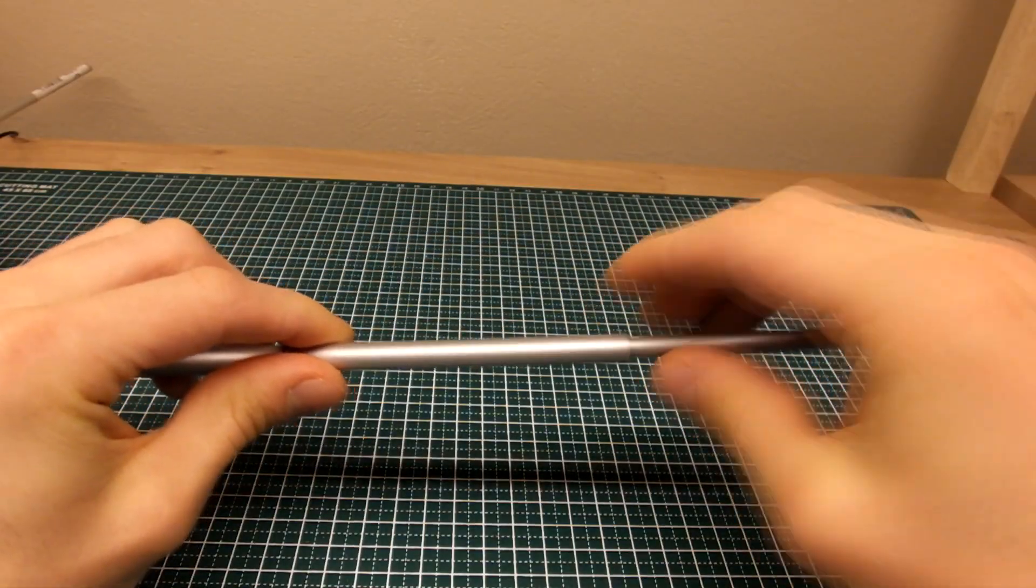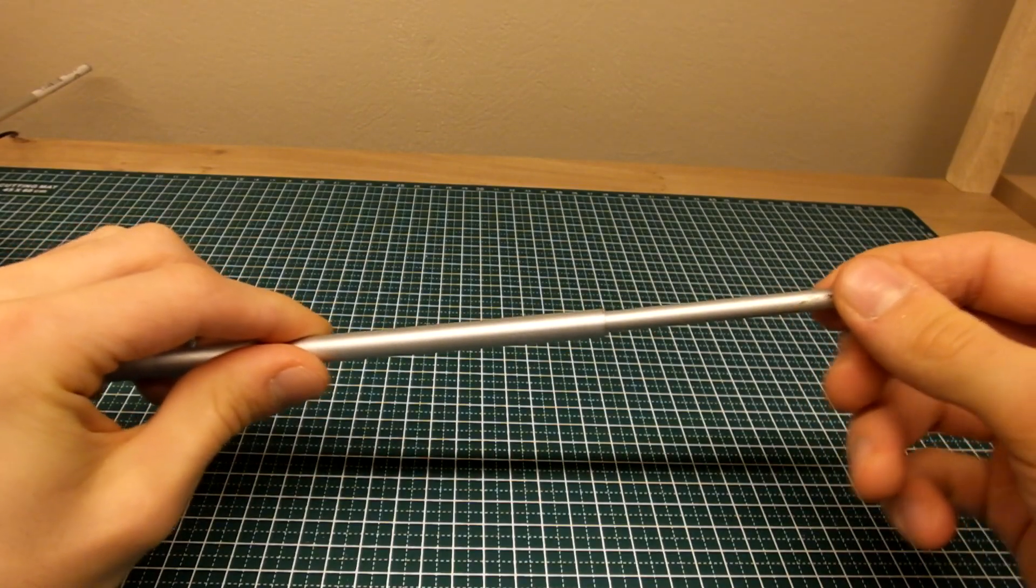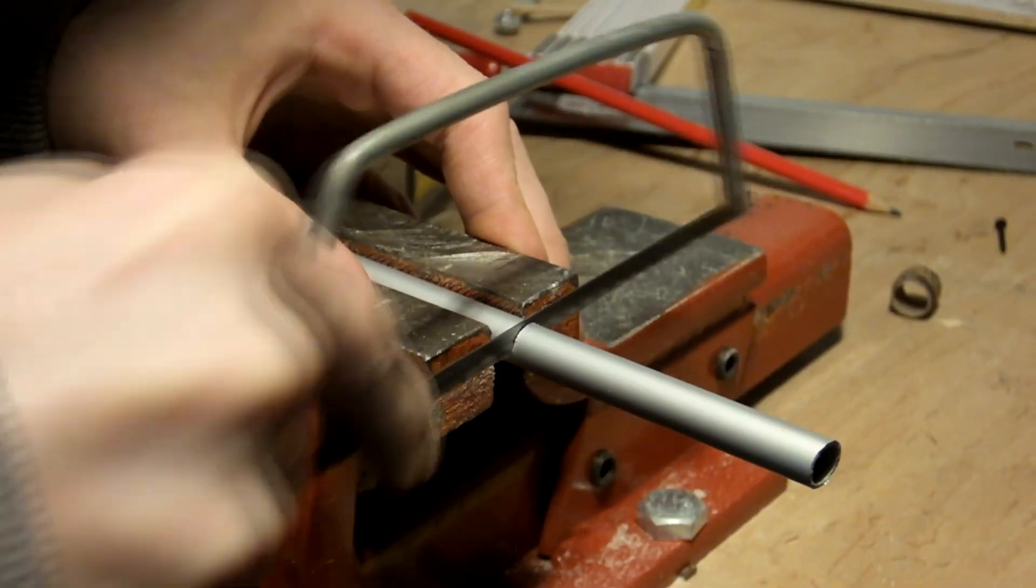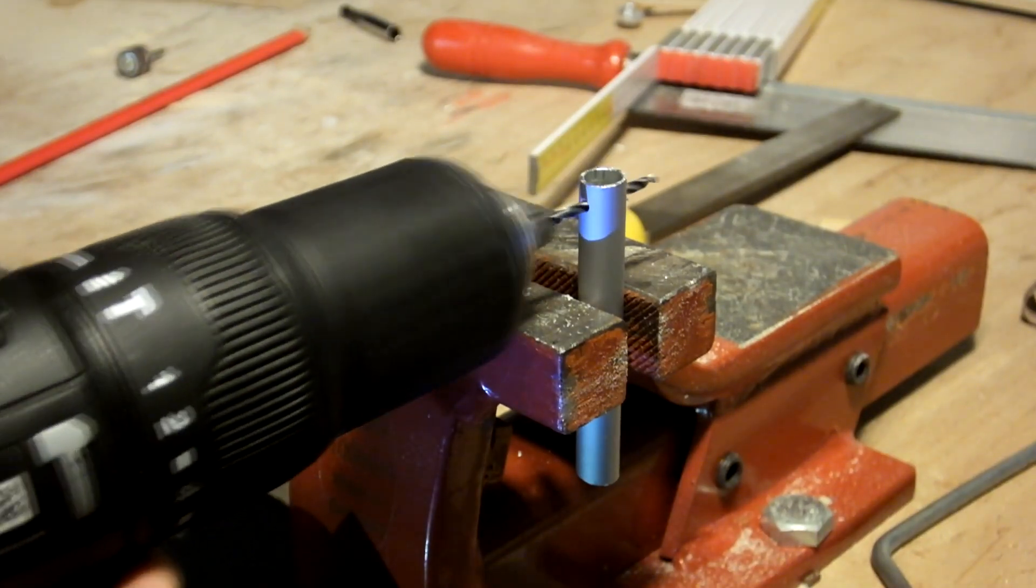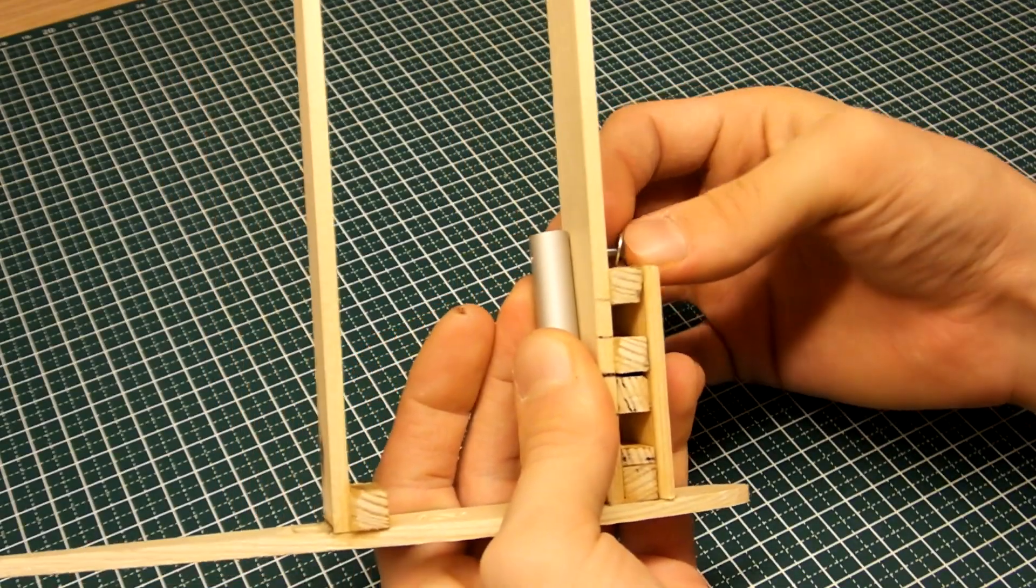The outer sections of the wing will be detachable and secured by aluminum pipes that snugly slide into each other.